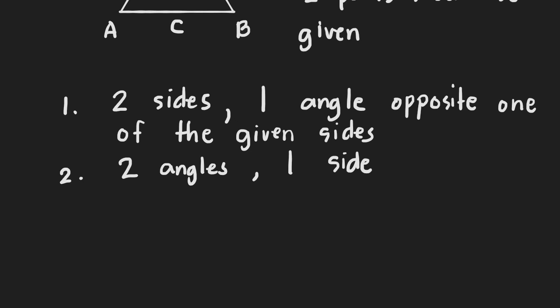This first case, we call it the ambiguous case. Why is it called the ambiguous case? We have a problem later in our examples concerning this case. Many things can happen if we are given two sides and one angle opposite one of the given sides. There might be no such triangle, there might be only one triangle that can be formed, or there might be two triangles that can be formed. We'll talk about the ambiguous case later in our examples.